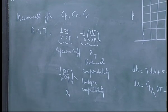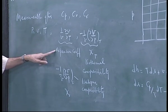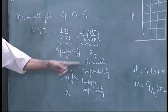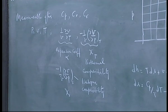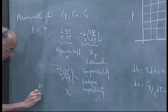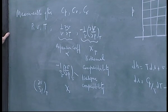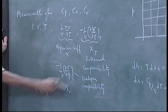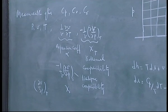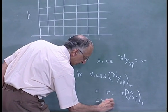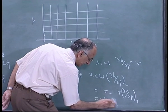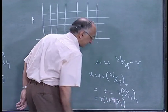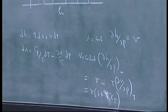I do not exactly remember what Smith and Van Ness uses. Usually they use alpha for the expansion coefficient and beta or chi for compressibility — in some books it is chi. When I have the partial of V with respect to P at constant temperature, this is simply minus V times χ_T, so this equals V times χ_T.